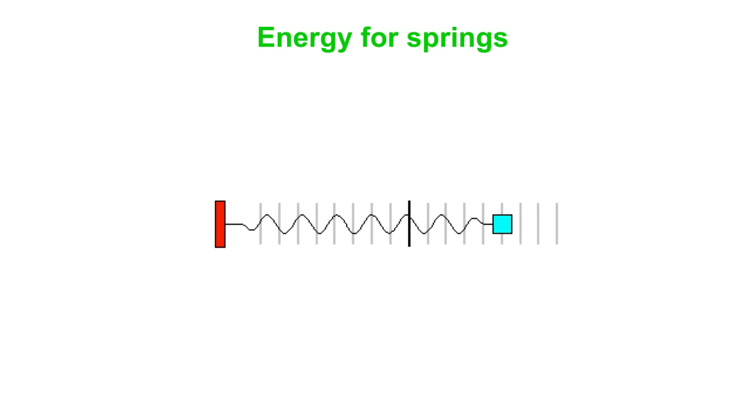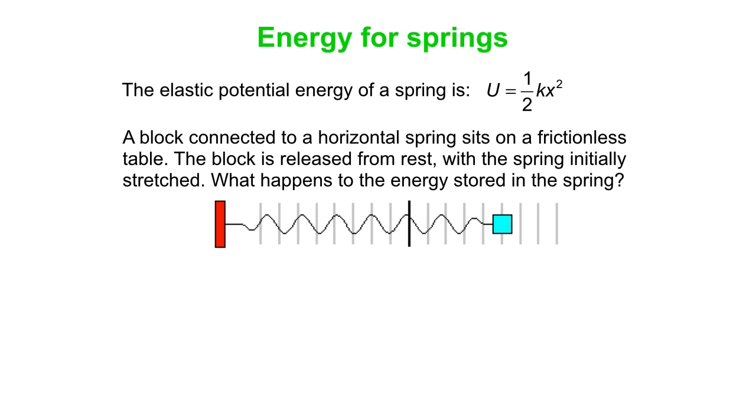So that leads us to energy. And so we can define an elastic potential energy, and it turns out to be one-half kx squared. So if we have a block on a frictionless table attached to a spring, we let the block go from rest. What happens to the energy stored in the spring?